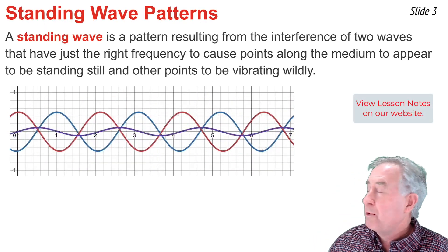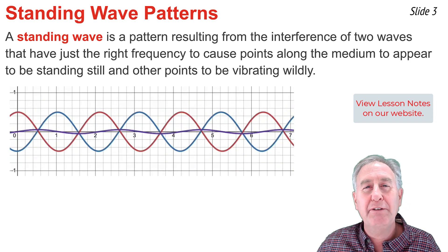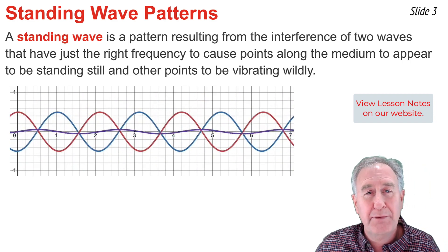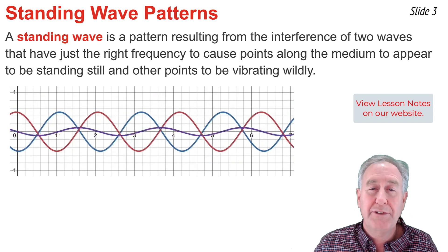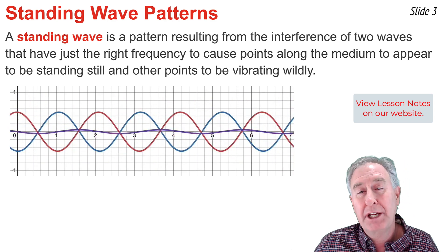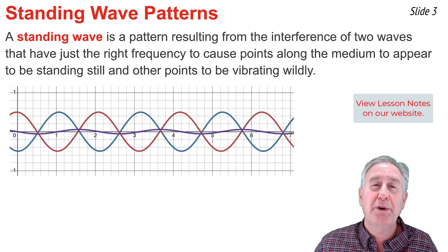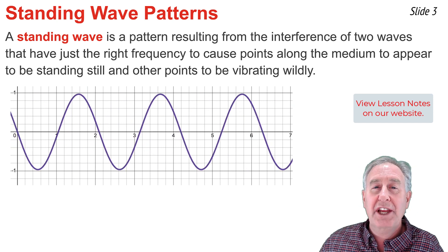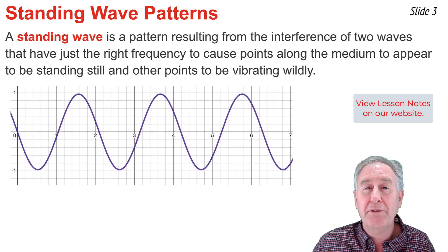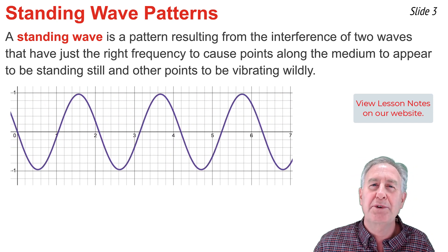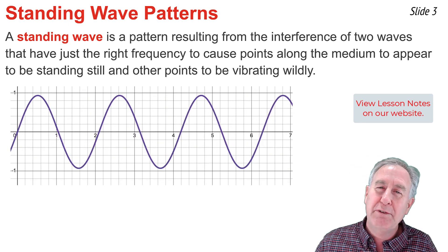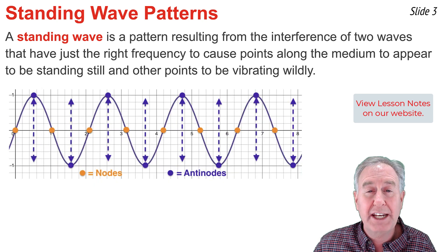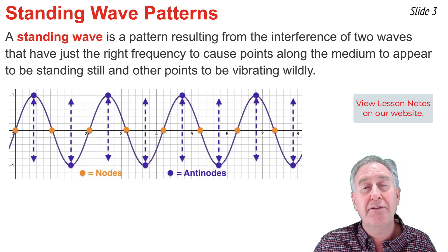This animation shows a red wave traveling to the right and interfering with a blue wave that is traveling to the left and has the same frequency. We would not actually see the two waves traveling through the medium, but instead would observe the medium vibrating as a standing wave pattern, as represented here by the purple wave. A standing wave pattern is produced whenever two waves with just the right frequency are traveling in opposite directions and interfering in such a manner that there are points along the medium that are standing still and other points that are vibrating wildly.